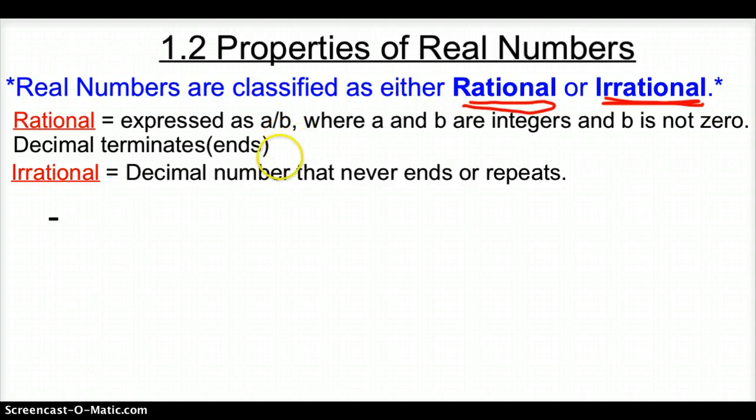So a rational number ends, well let's think about this. Does 0.333 repeating end? No it does not but we know that we can write 0.333 repeating as one third. Just because a decimal repeats doesn't mean it's irrational because we might be able to write some decimal numbers that repeat as fractions.